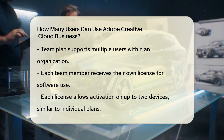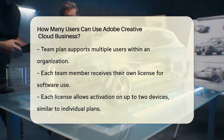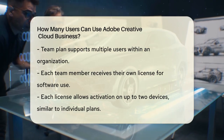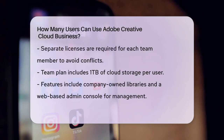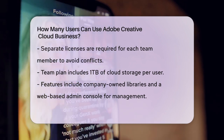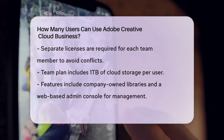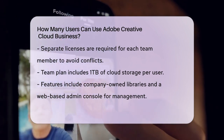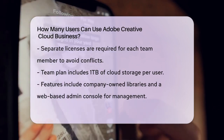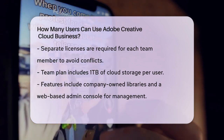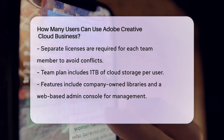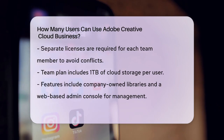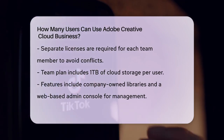Here's how it works. If you have a team of three people, you would need three separate licenses, one for each user. This ensures that each team member can use the software on their own devices without any conflicts or restrictions. The team plan also includes additional features like one terabyte of cloud storage per user, company-owned libraries, and a web-based admin console to manage licenses and billing.